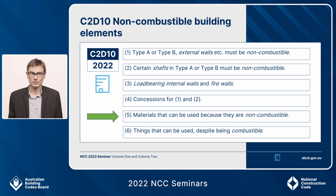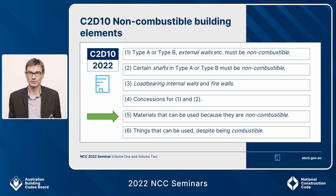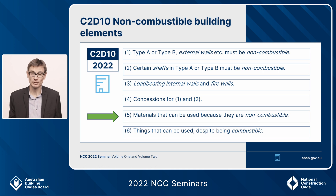The first change for 2022 is that what's currently C1.9E is pushed down to new sub clause 6, to make space for a new sub clause 5. This new sub clause 5 is a list of materials that can be used wherever something needs to be non-combustible, because really they are non-combustible.